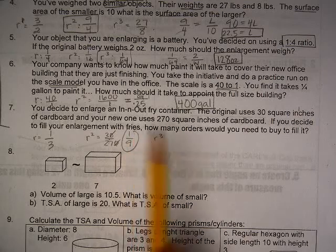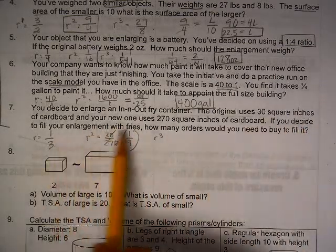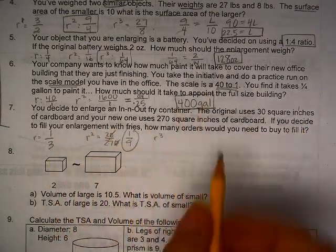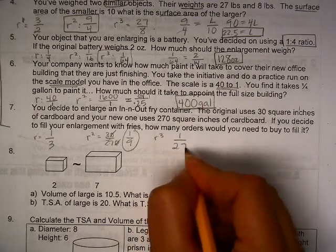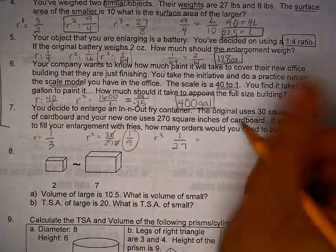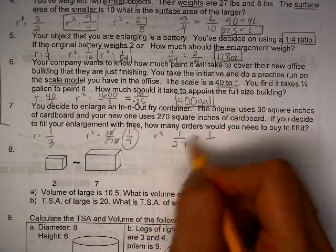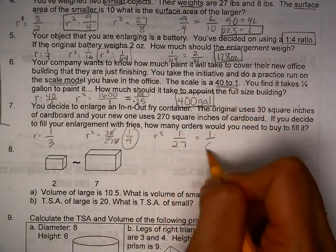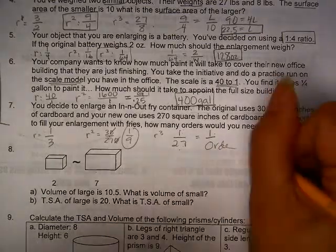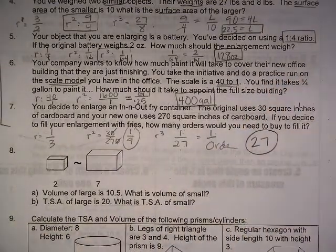I'm talking about filling it with fries, and so it takes one order, obviously, for the small, and I want to know how many orders it takes for the bigs. So this is my ratio that I use, and it's kind of a silly ratio. 1 is to 27 is 1 order is to how many orders, which is obviously 27 orders.